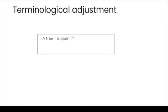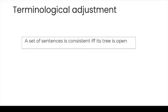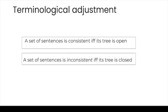Now we can introduce a terminological shortcut and talk about open and closed trees. A complete tree T is open whenever T has at least one open path, and closed otherwise. More explicitly, a tree T is open if and only if T is complete and T has at least one open path. Correspondingly, a tree T is closed if and only if T is complete and all of T's paths are closed. So, a set of sentences is consistent if and only if its tree is open, and inconsistent if and only if its tree is closed.